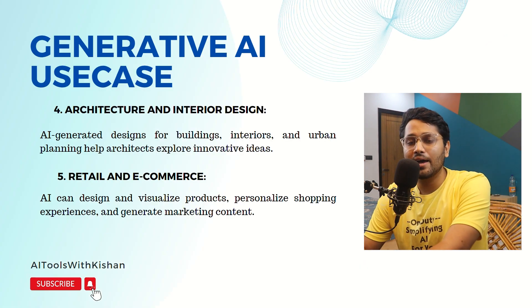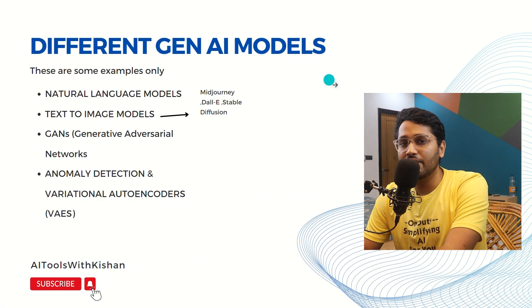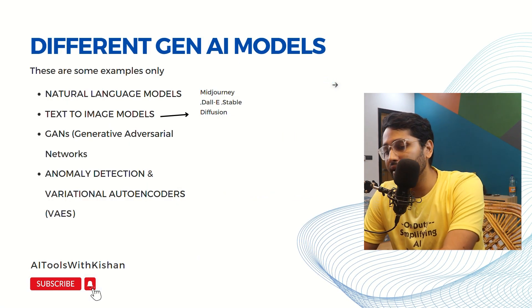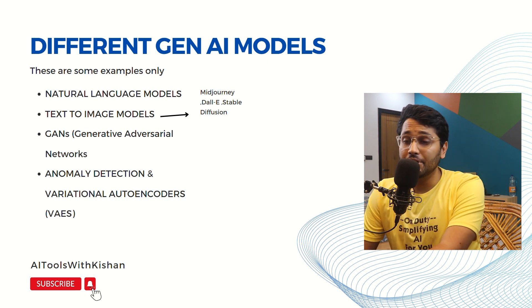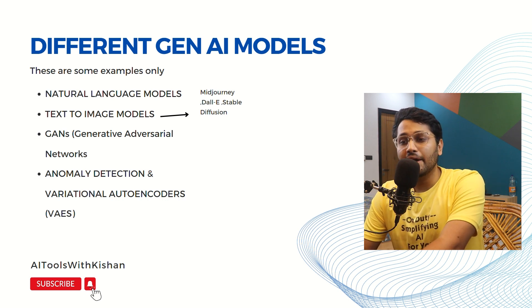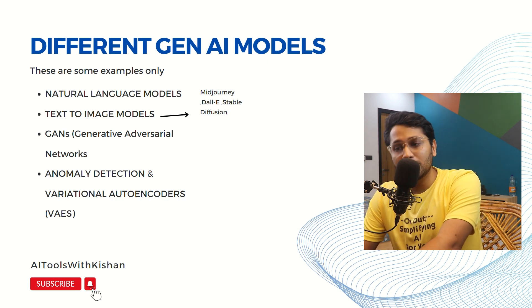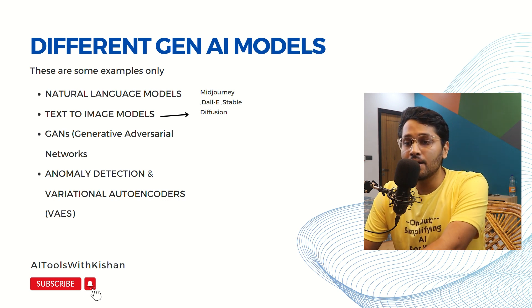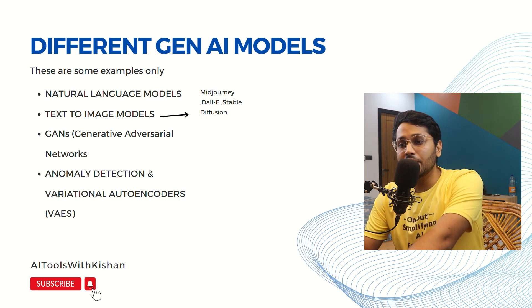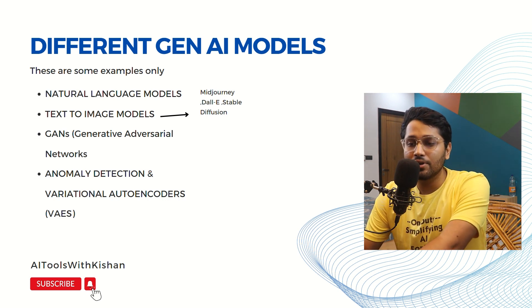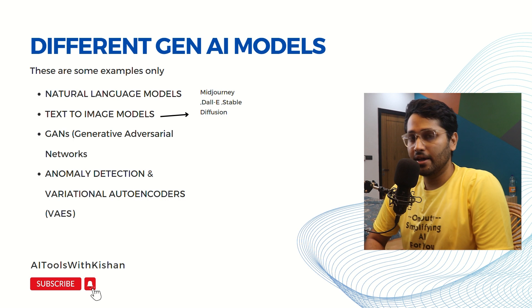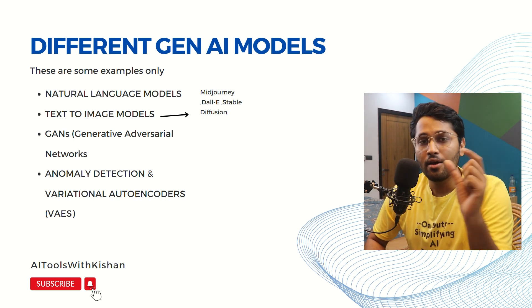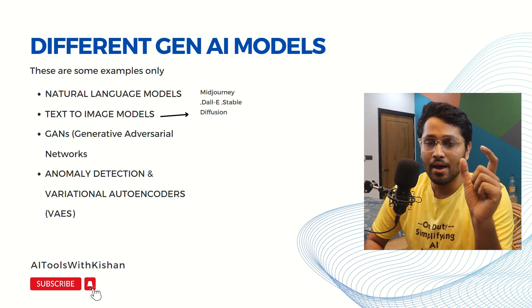Now coming to the different Gen AI models. There are natural language models, which ChatGPT uses. There are Text-to-Image models. And there is GAN — Generative Adversarial Network. So basically, GAN is like: we have a Generator and we have a Discriminator.